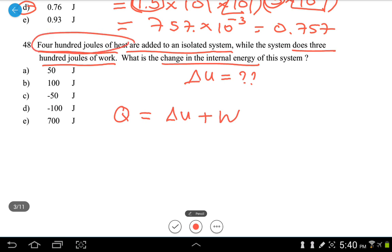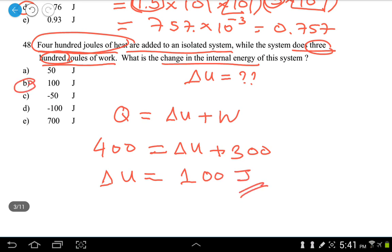Heat is Q. So this here is 400 joules. We are to find delta U. W is how much? How much work is done to the system? 300 joules. So I'm putting 300 here. Therefore, delta U is 400 minus 300, which is 100 joules. The answer will be B.